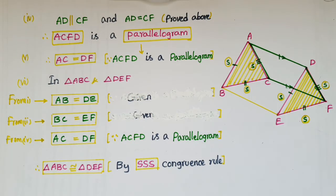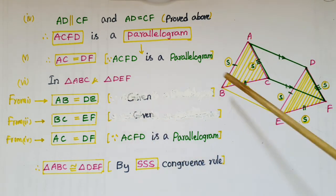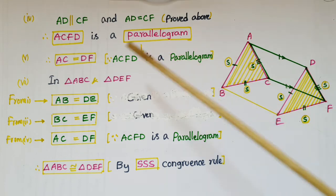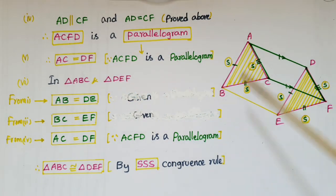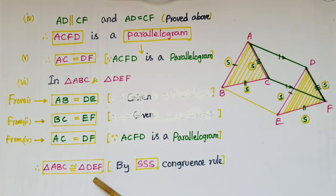Next, we have to prove that triangle ABC is congruent to triangle DEF. First, mark the equal parts of the two triangles: AB is equal to DE — given; BC is equal to EF — given; and AC is equal to DF — just proved. Since all three sides of triangle ABC are equal to the corresponding sides of triangle DEF, triangle ABC is congruent to triangle DEF by the SSS congruence rule.